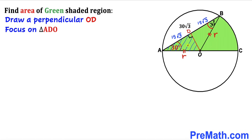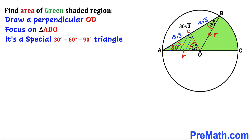Now let's focus on right triangle ADO. We know the angle at D is 90 degrees and angle OAD is 30 degrees. Therefore angle AOD must be 60 degrees, since the angles in any triangle sum to 180 degrees. So we have a 30-60-90 degree special triangle.